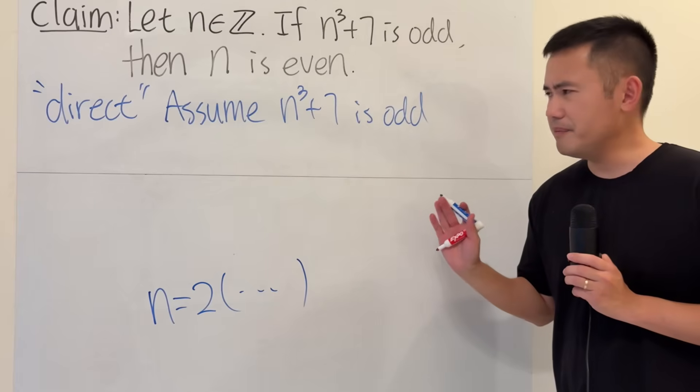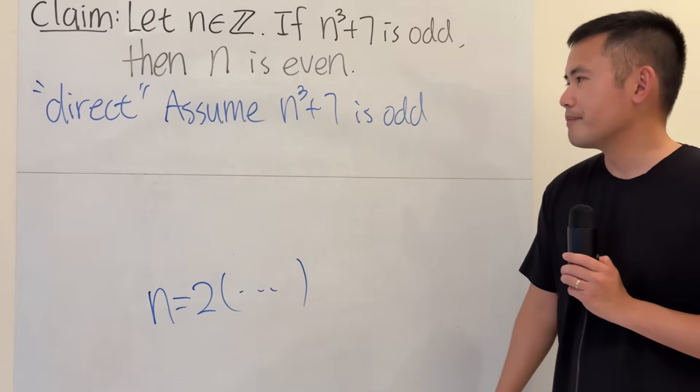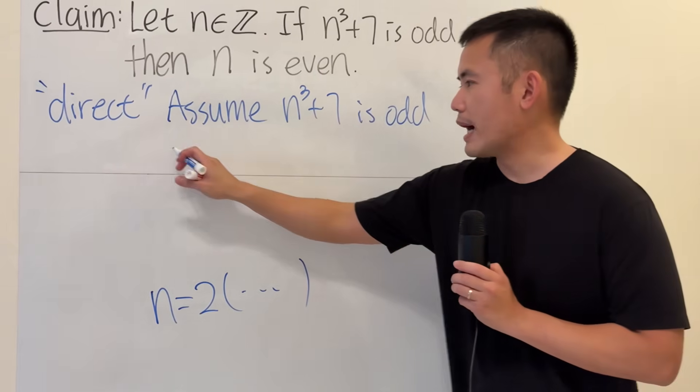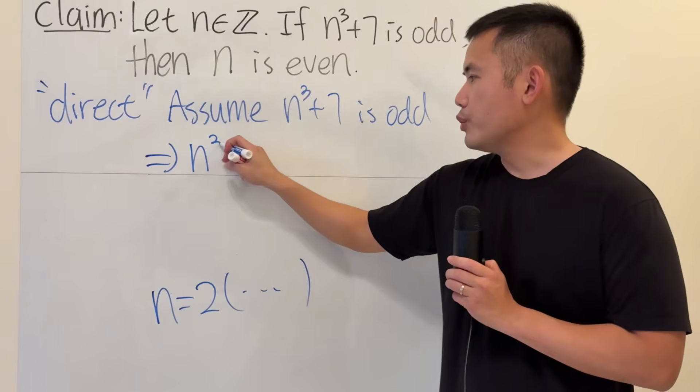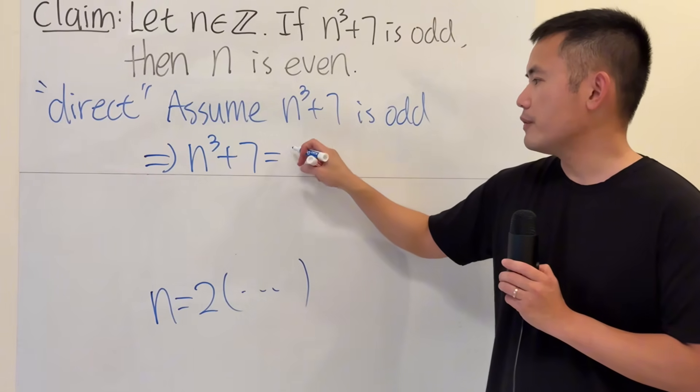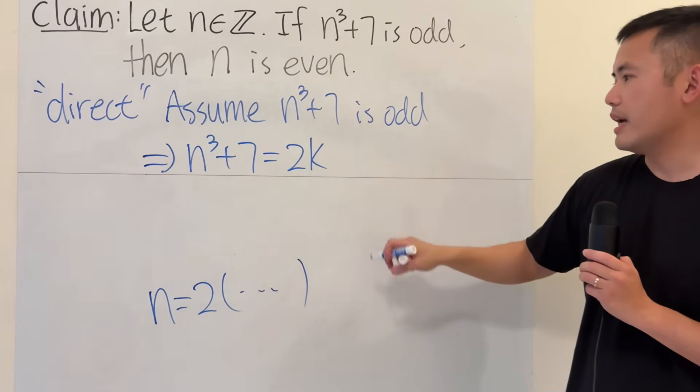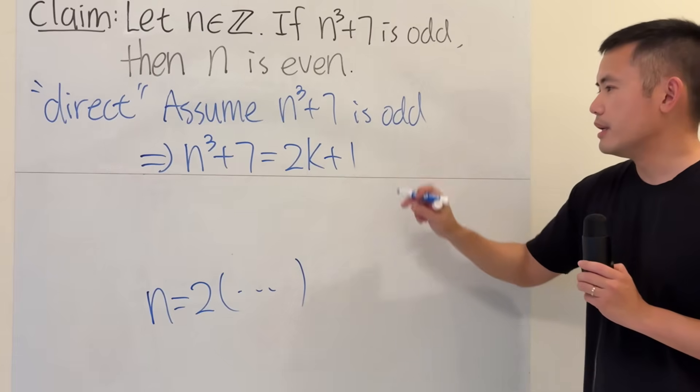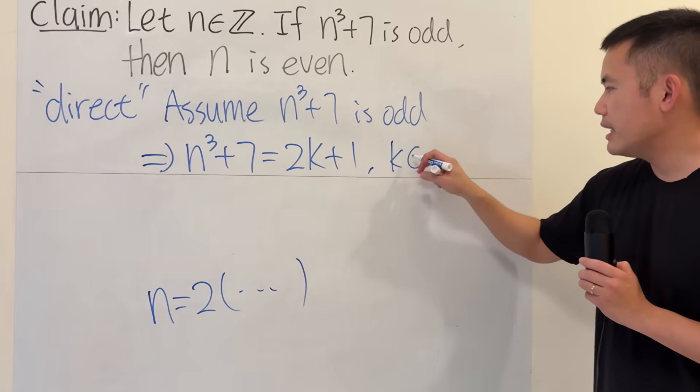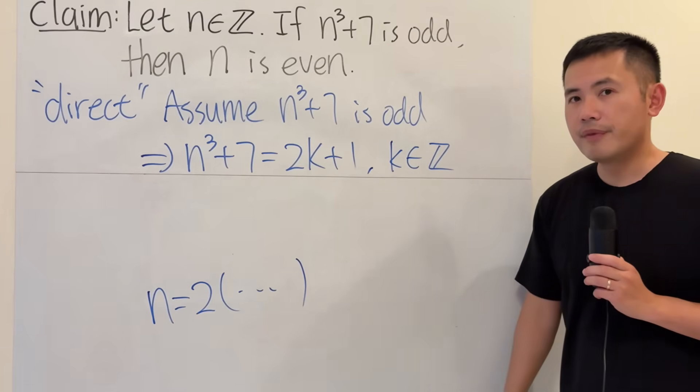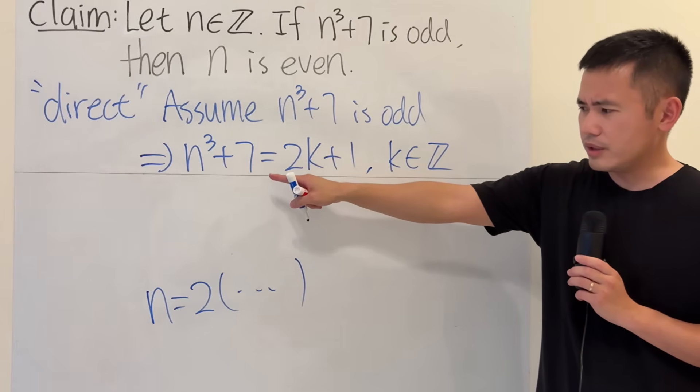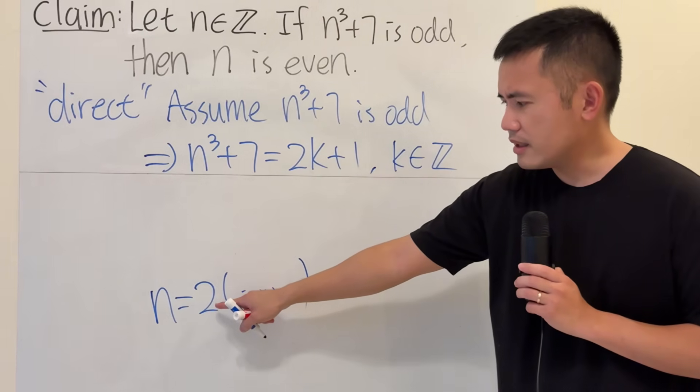And let's see, how come this is hard? Firstly, this is odd. So that means we can write n cubed plus 7 in the form of 2 times some integer, let's say k, plus 1. And you can also put minus 1 here. Doesn't matter. And let me indicate that k is an integer. Now, the goal is to get n by itself, and hopefully to show that n is a multiple of 2.